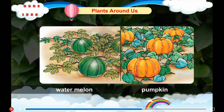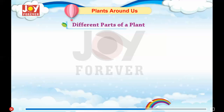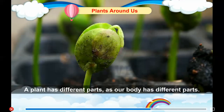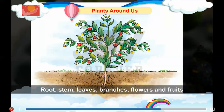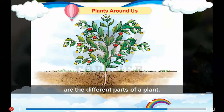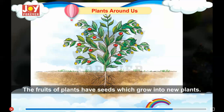Watermelon, pumpkin. Different Parts of a Plant: A plant has different parts as our body has different parts. Root, stem, leaves, branches, flowers and fruits are the different parts of a plant. The fruits of plants have seeds which grow into new plants.